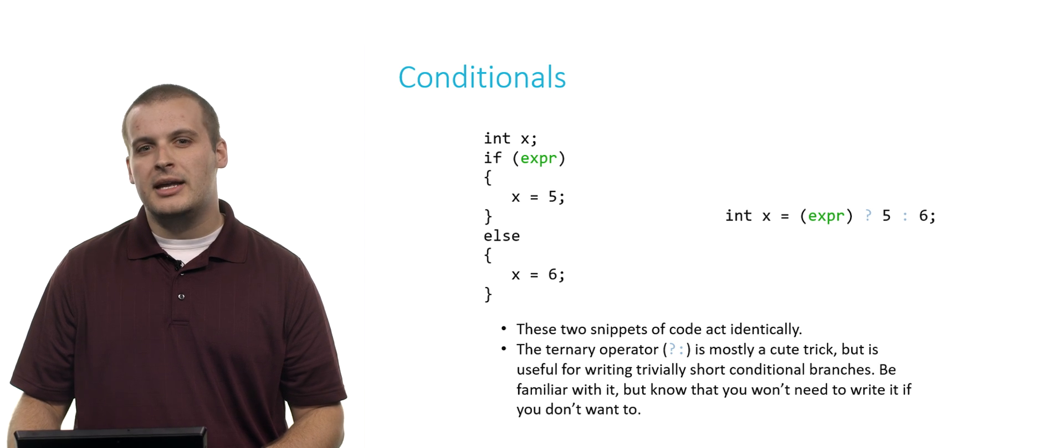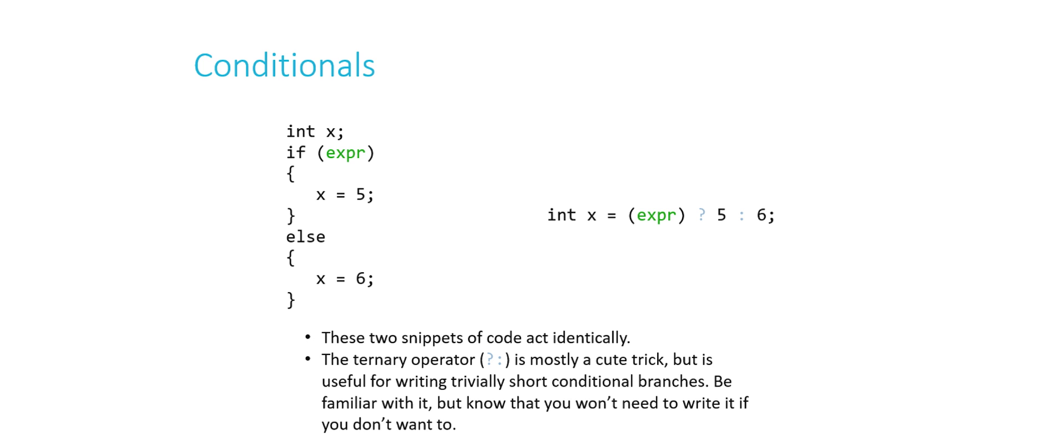So this is called question mark colon, or sometimes called the ternary operator. And it's pretty cool. It's usually used as a cute trick. But what it allows you to do is to simulate an if-else with really small, really trivially short conditional branches. You generally wouldn't use question mark colon if you had six lines of code between each set of curly braces. But if you're just making a quick decision, if you're going to do one thing or the other, and it's very simple, this might be an example of how to do it with question mark colon, the ternary operator. So int x equals expression question mark. The thing after the question mark is what x's value will be if expression is true. The thing after the colon is what x's value would be if the expression was false. So I'm asking myself, is the expression true? If it is, assign x to the value 5. If it's not, assign x to the value 6.